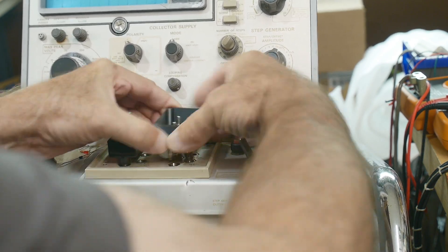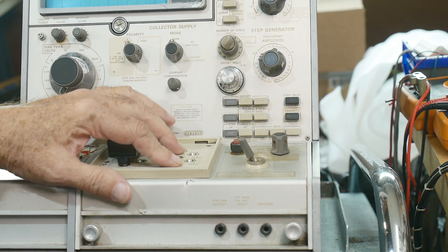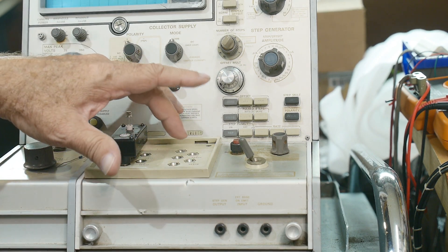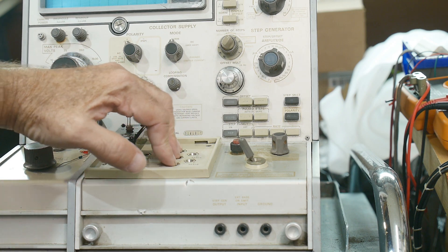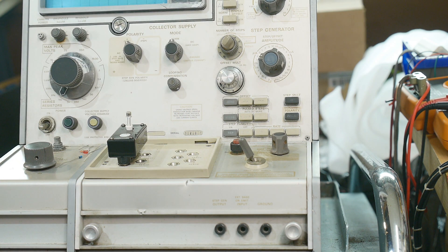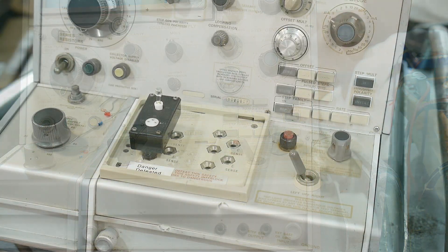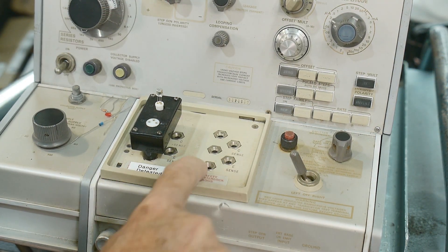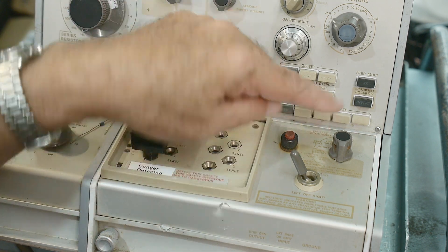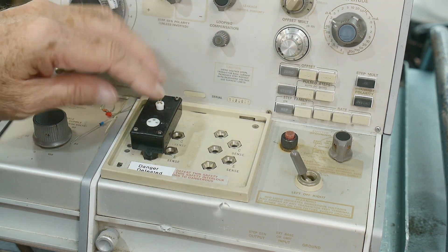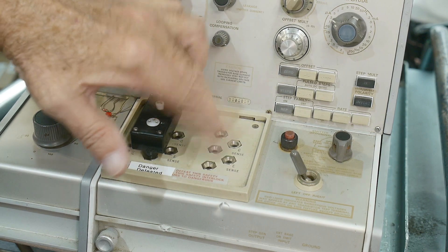So the way that these sockets work here is that there is emitter, base, collector, and that's what these three are. So collector, base, emitter. And the base is the one that gets stepped, and when you're testing diodes, you just use these two, the collector emitter.